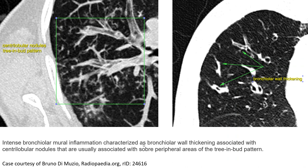Here is another example where we focus on the bronchiolar wall inflammation characterized by bronchiolitis, with bronchiolar wall thickening associated with centrilobular nodules that are usually associated with an appropriate area of the tree-in-bud pattern.